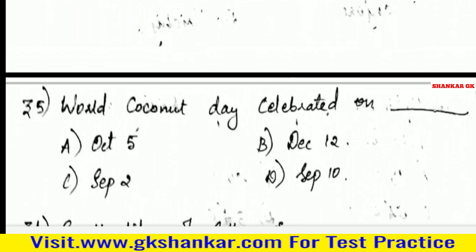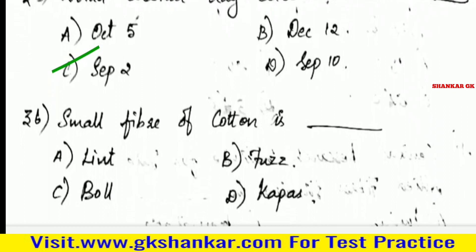Thirty-fifth question: World Coconut Day is celebrated on — A. October 5, B. December 12, C. September 2, D. September 10. Answer: C. September 2.